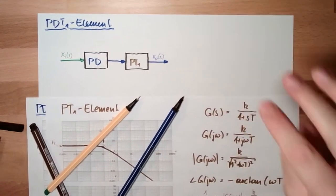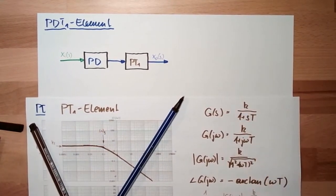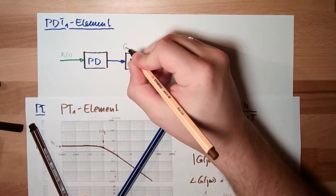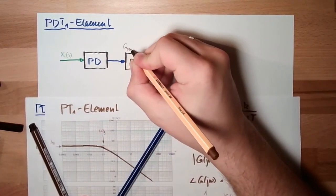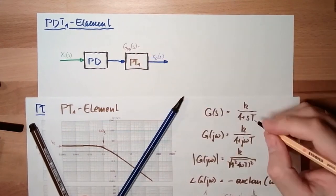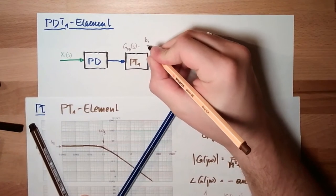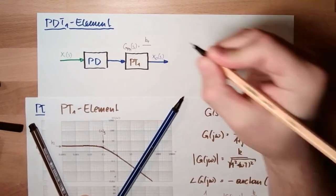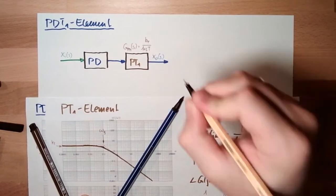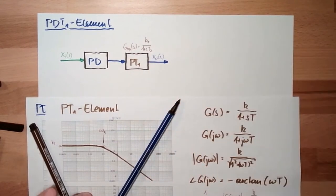We see the transfer function of the PT1 element all the time. The transfer function of the PT1 element, G_PT1, is K_T divided by 1 plus S·T2 — I call it T2 because it's the second element.